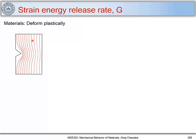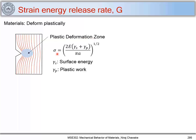Let's consider a material with a surface notch. There will be stress concentration ahead of the crack tip. When the stress ahead of this crack tip increases beyond the yield strength of the material, there will be plastic deformation in a zone called the plastic deformation zone. We add one more term, gamma P, to the relation. For brittle materials we just had gamma S, which is surface energy. When materials deform plastically, we add gamma P, which is plastic work, and we can use this relation to understand fracture mechanics of plastically deforming materials.